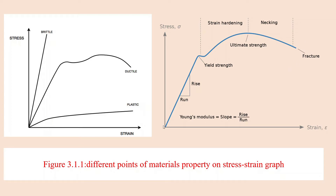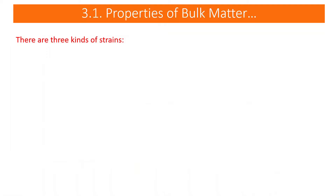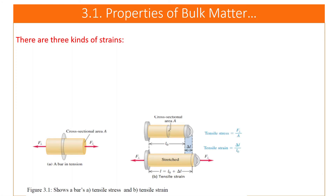We proceed to the next topic: there are three kinds of strain to consider. As seen in these two diagrams, this is a bar under tension — we have a force in the perpendicular direction, one to the right and the other to the left, and the cross-sectional area is given as A.